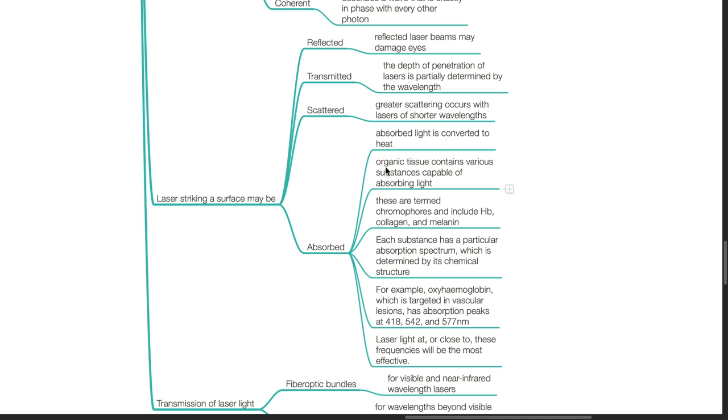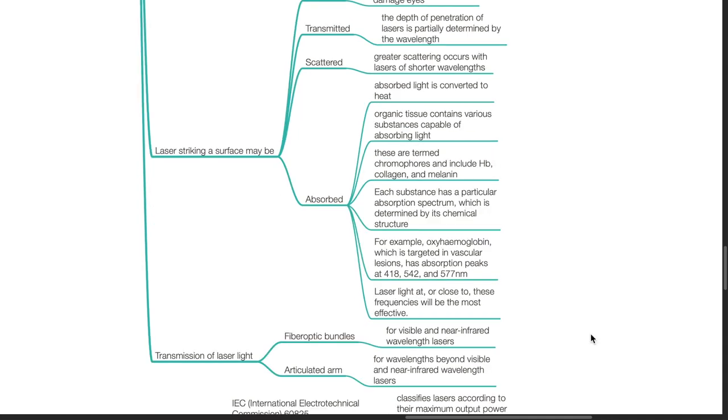Organic tissue contains various substances capable of absorbing light. These are termed chromophores and includes H2O, collagen, and melanin. Each substance have a specific absorption spectrum which is determined by its chemical structure. For example, oxyhemoglobin, which is targeted in vascular lesions, has absorption peaks at 418, 542, and 577 nanometers. Laser light at or close to these frequencies will be the most effective.